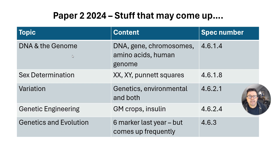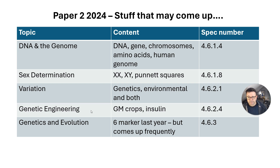On DNA and the genome, always learn about DNA, genes, chromosomes, and the human genome. There was quite a lot on inherited disorders last year, but still make sure you know your Punnett squares and pedigree charts. Cover sex determination — XX for female and XY for male. Variation was not covered — genetic, environmental, or both. Genetic engineering is a big one: GM crops, production of insulin, and biotechnology.